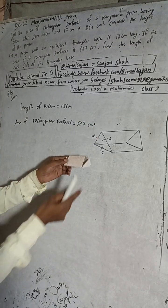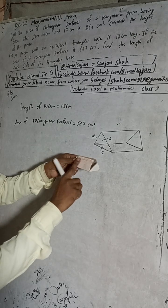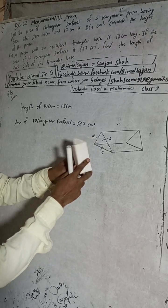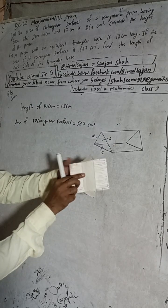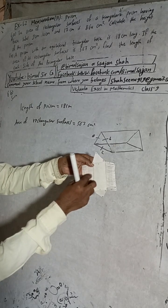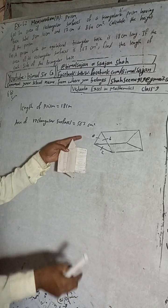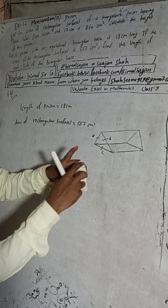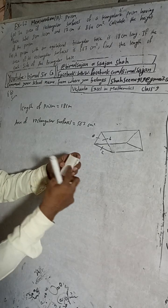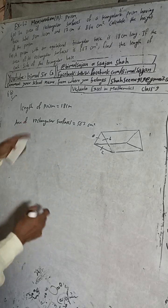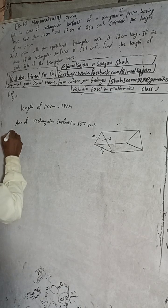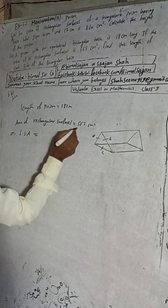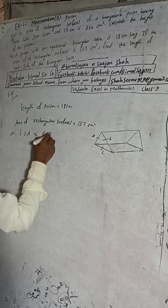Area of rectangular surface means there are three rectangular surfaces: 1, 2, and 3. These three together are called the lateral surface area. Without the top and bottom, it is called lateral surface area. So the lateral surface area is equal to 567 cm².